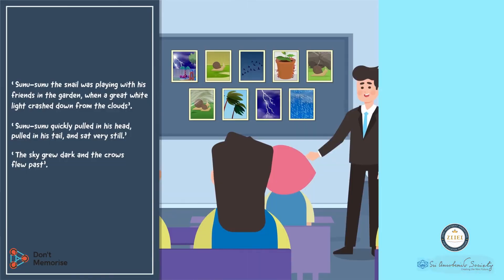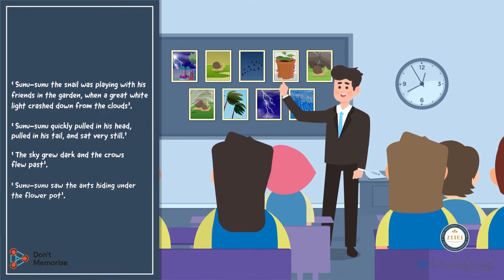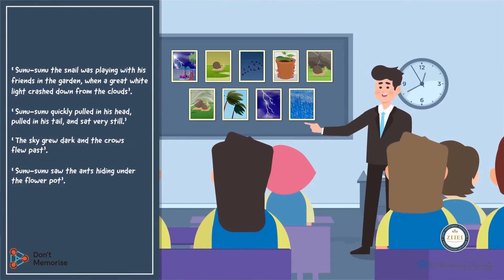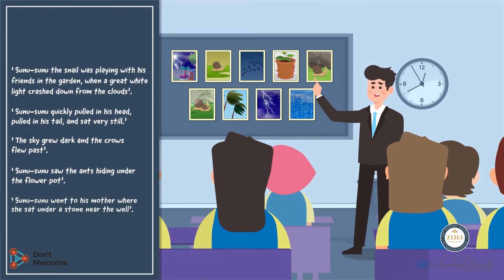Further, point towards the picture card of the ants hiding under the flower pot and say: Sunu Sunu saw the ants hiding under the flower pot. While pointing towards the picture card of the snail's mother sitting under a stone near the well, say: Sunu Sunu went to his mother where she sat under a stone near the well.